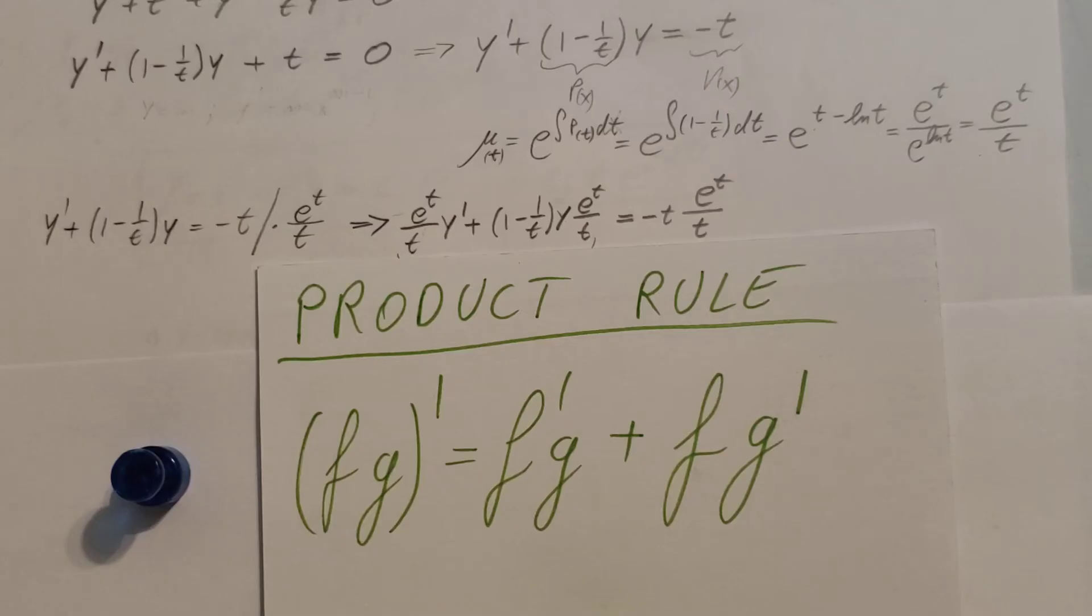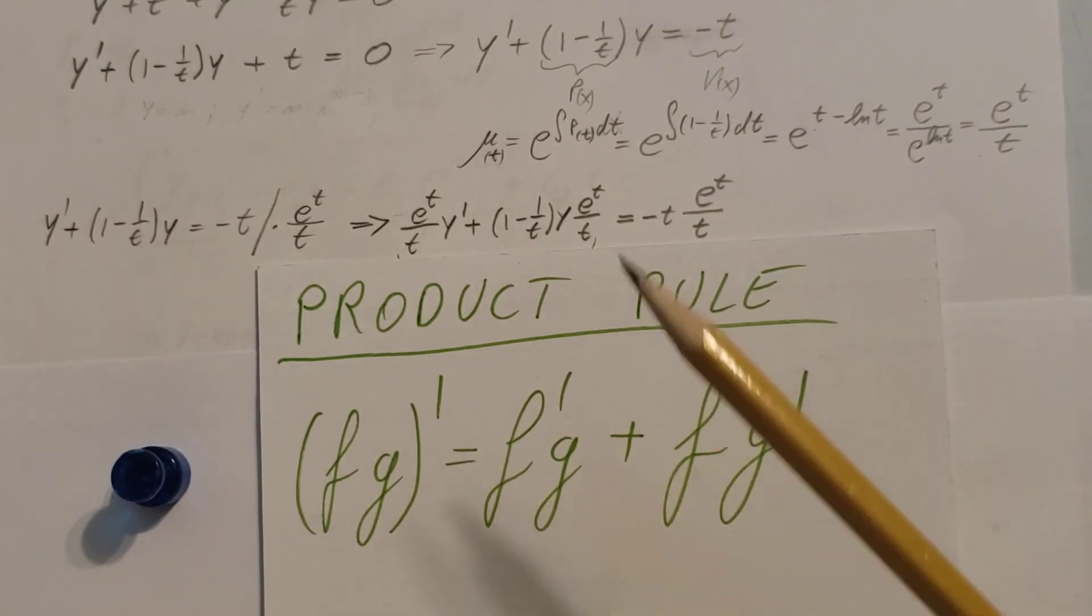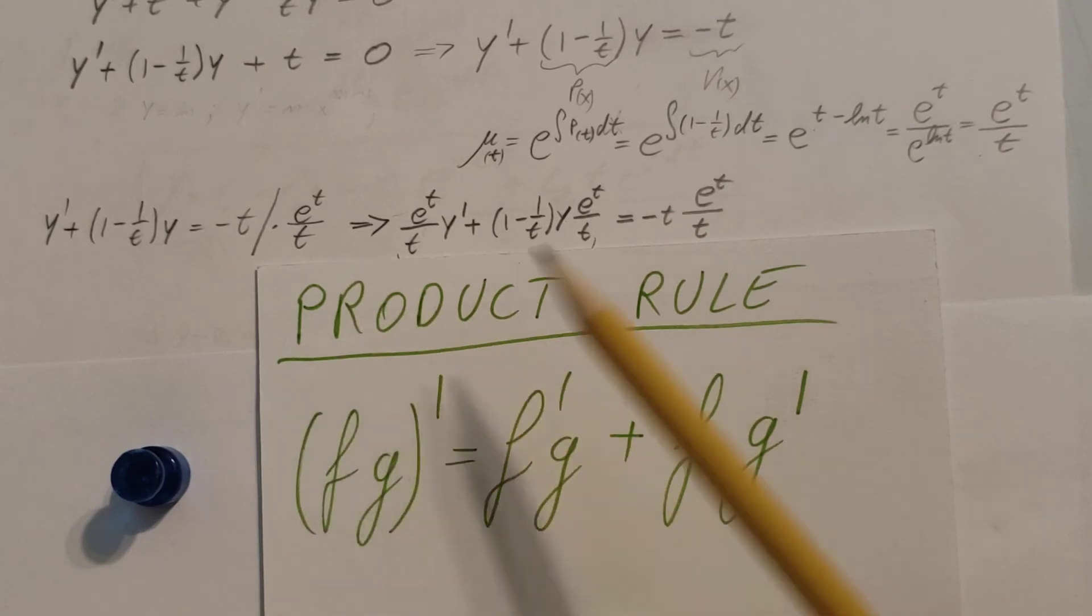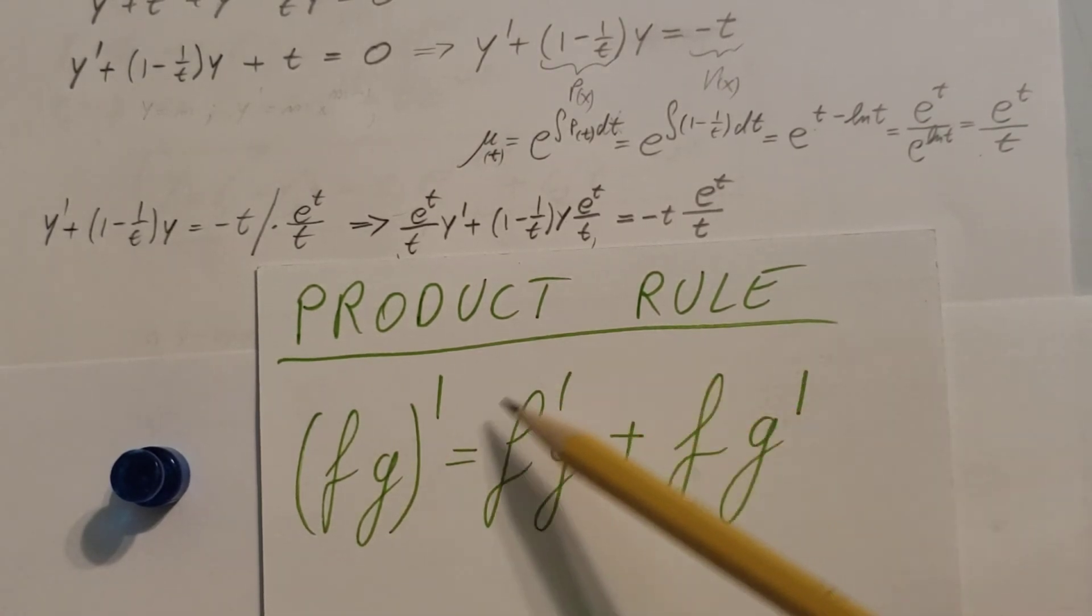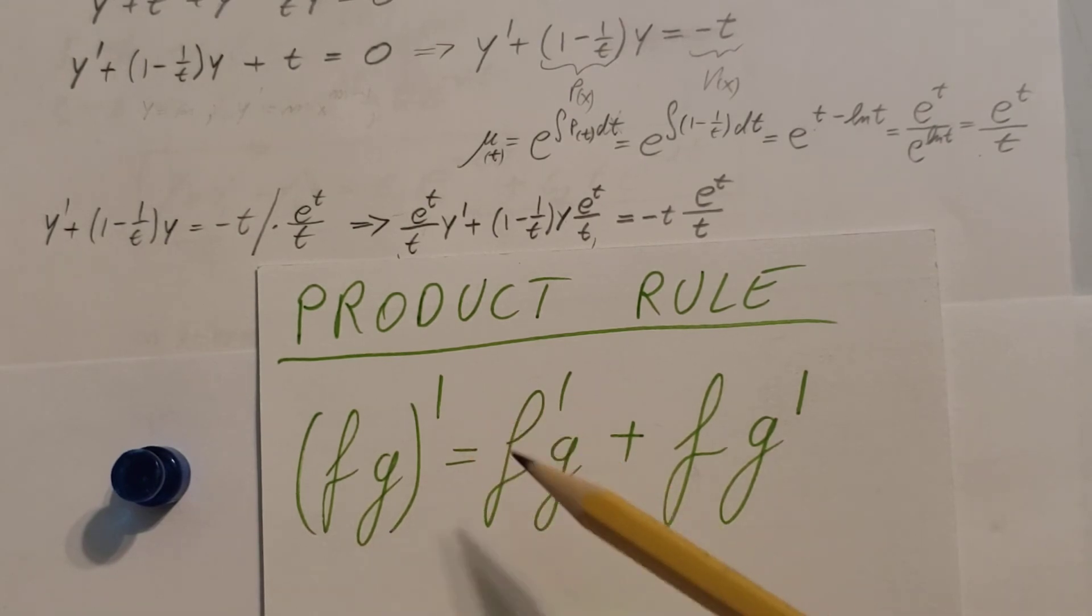Now the whole point of this process comes from here. Recall from your calculus when we did the product rule, f times g, take the derivative is equal to this right here, the product rule.